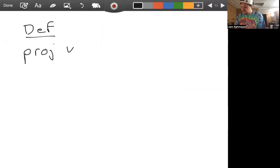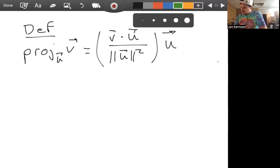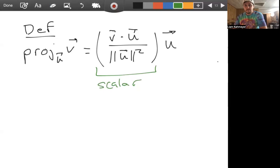But I'll go ahead and write this as a definition here. The projection of V onto U is defined as (V dot U) over (magnitude of U squared) times the vector U. And this formula can be intimidating, but I promise you it's not. This is all a scalar.